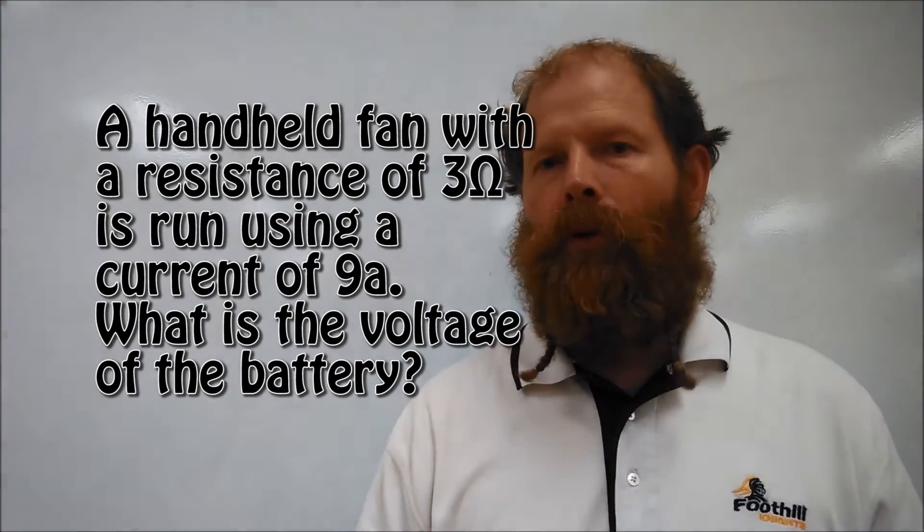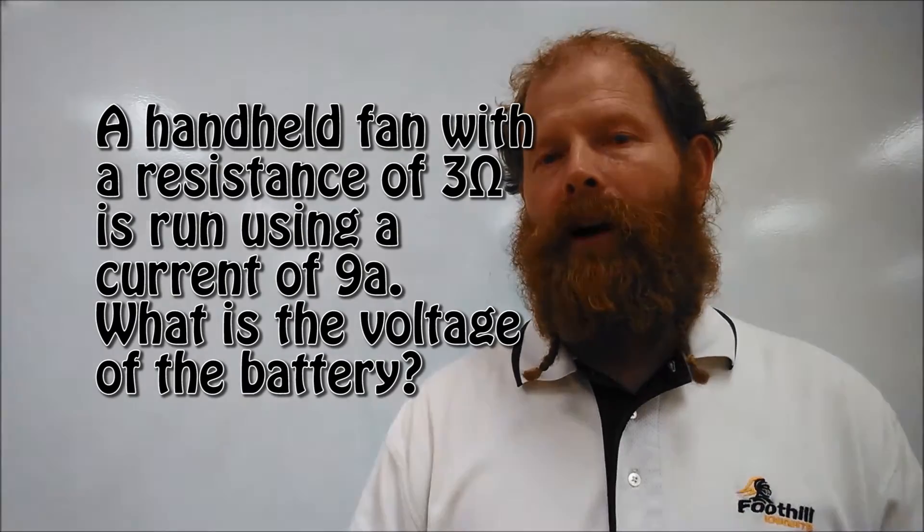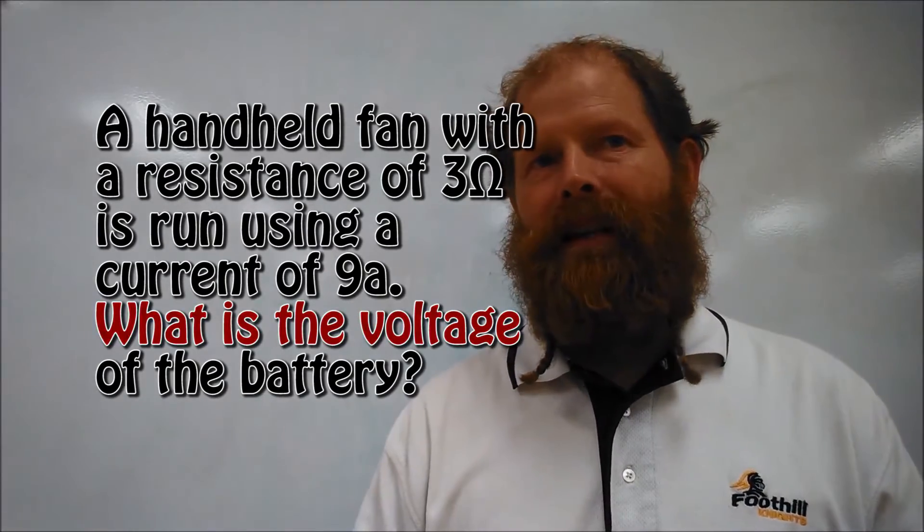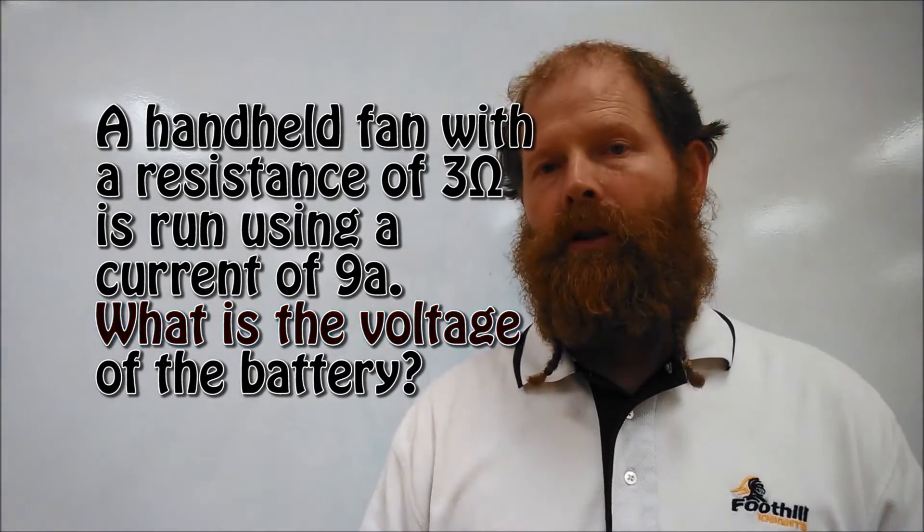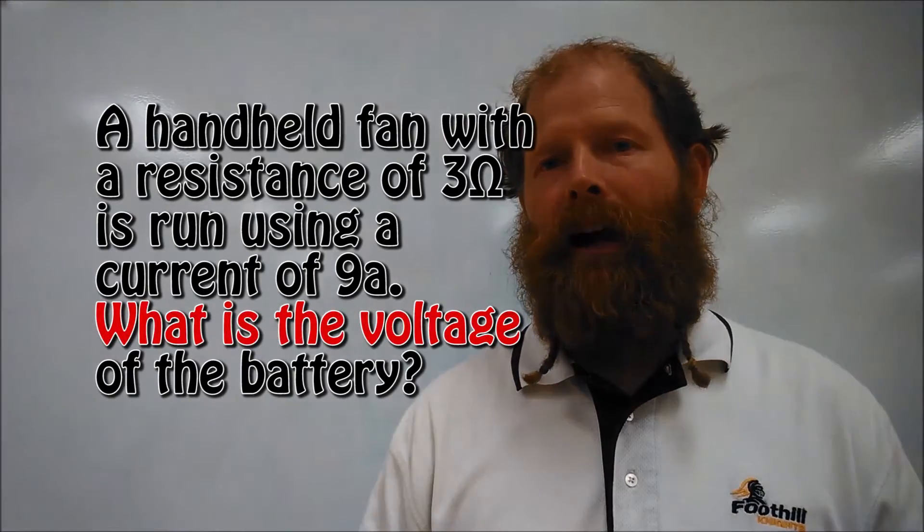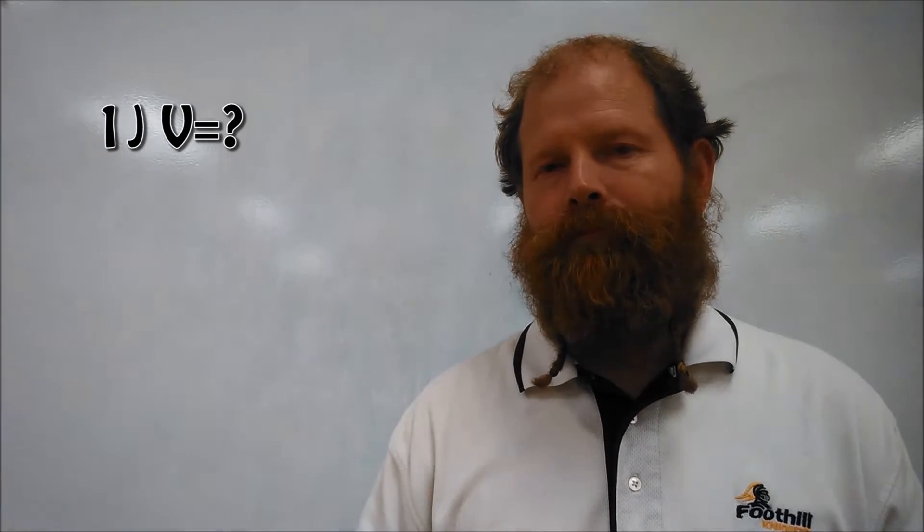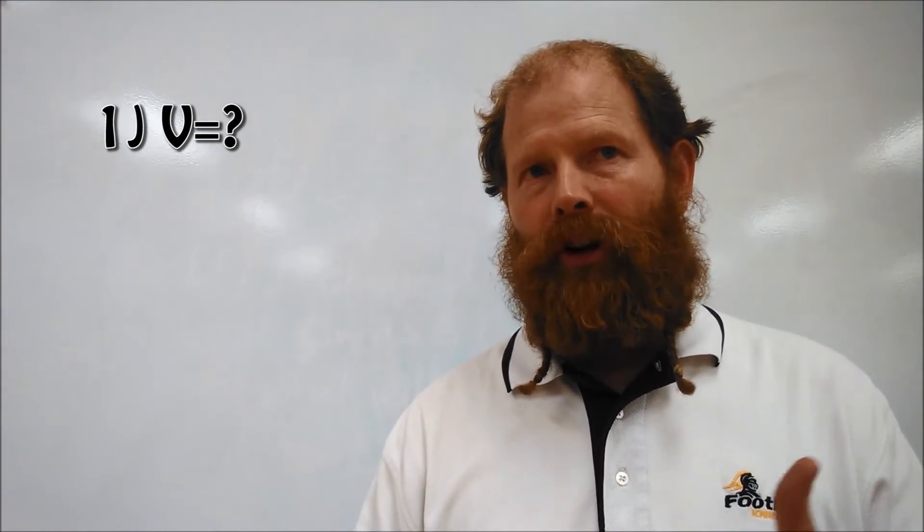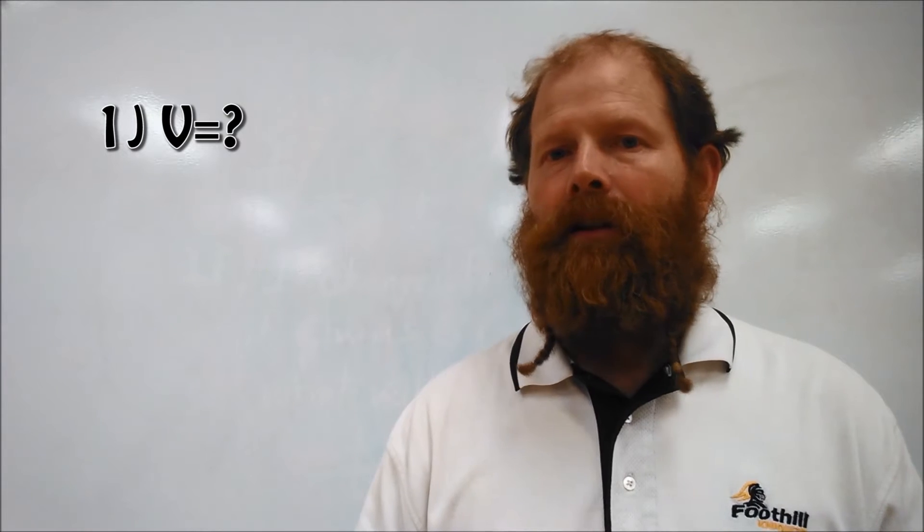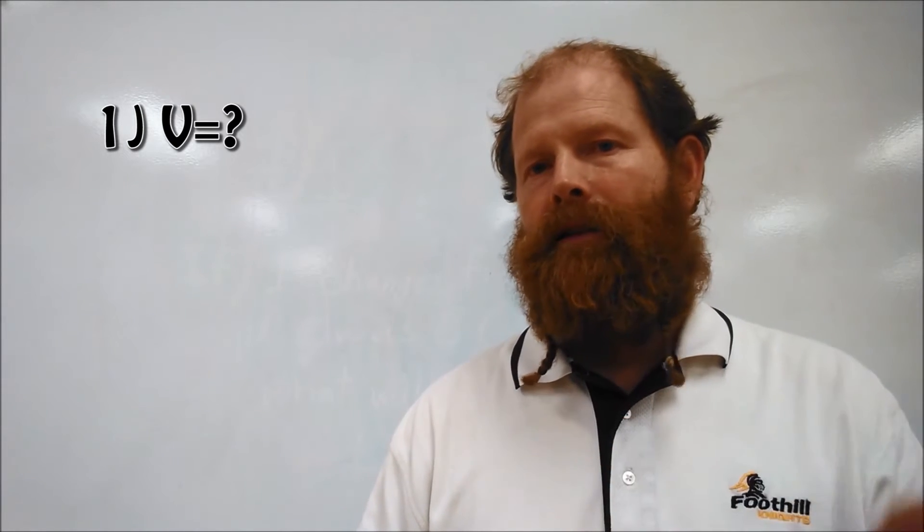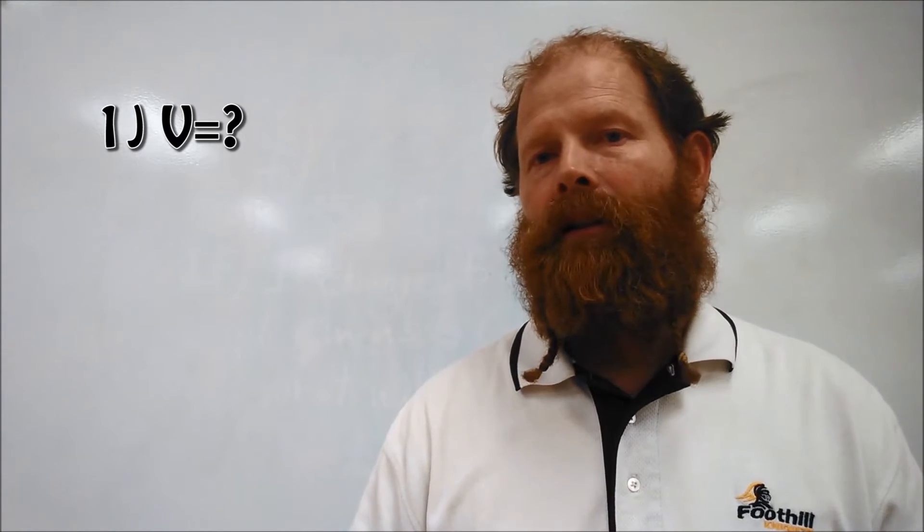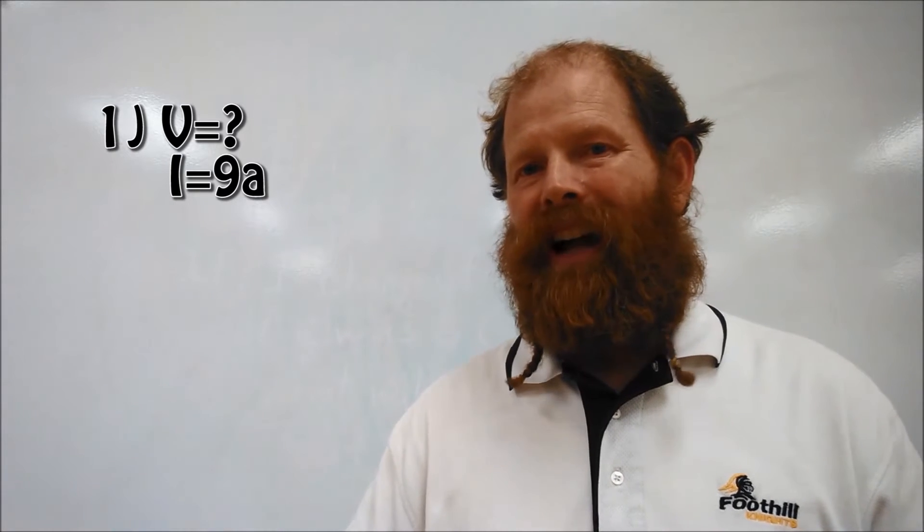So first thing you have to do is look for what the variables are. First thing we see is we're looking for the voltage. So if you look on your list that we have, you'll see that voltage is capital V. So we write V equals question mark. Then we see that we have a current of 9A. Current, we look that up on our list. Current is capital I. Capital I equals 9A.